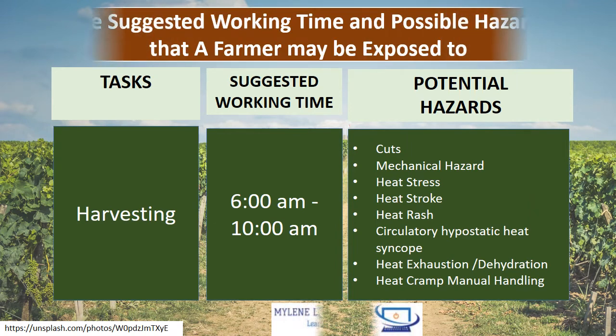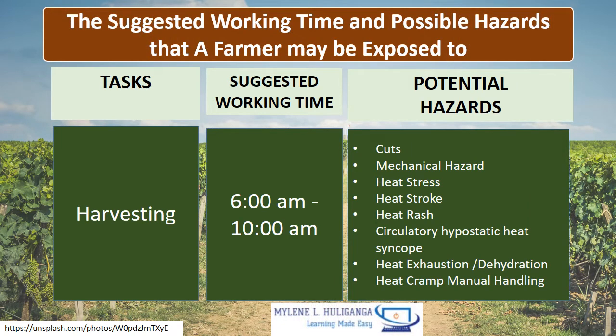Harvesting. Suggested working time is 6 a.m. to 10 a.m. Potential hazards are cuts, mechanical hazard, heat stress, heat stroke, heat rash, circulatory hypostatic heat syncope, heat exhaustion, dehydration, heat cramp, and manual handling.